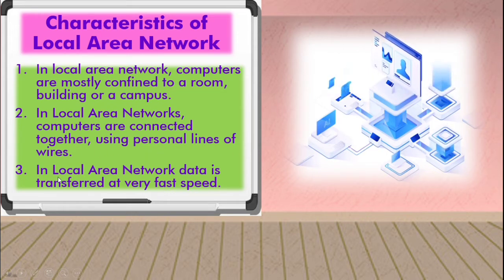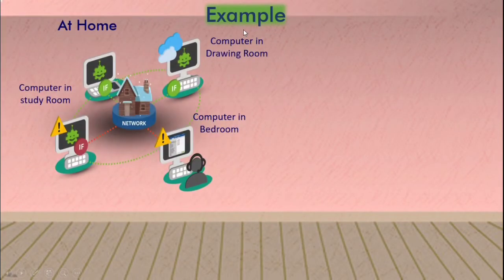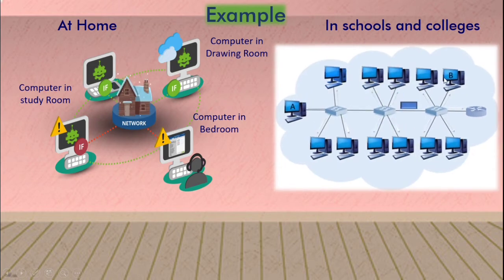Now we will see an example of a local area network. At home, when multiple computers are connected to each other, that is known as a local area network. See here — in one house, computers are connected with each other: one computer in the drawing room, one in the bedroom, computers in the study room. These are all connected at a short distance, meaning it is using a local area network. Similarly, in schools and colleges, the computers in the computer room are connected together.